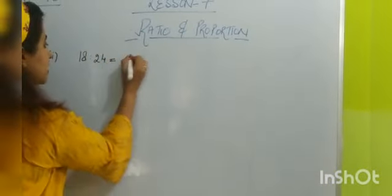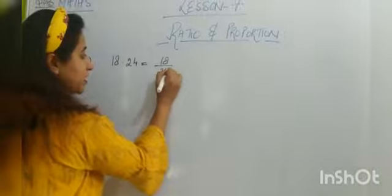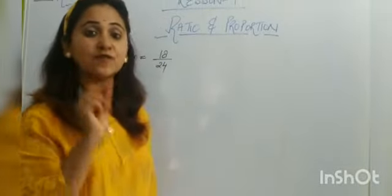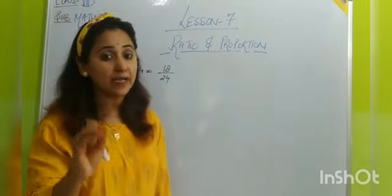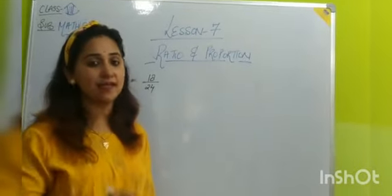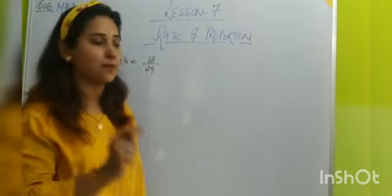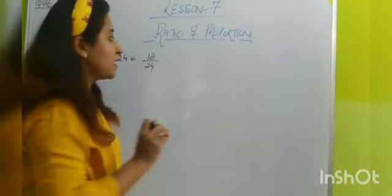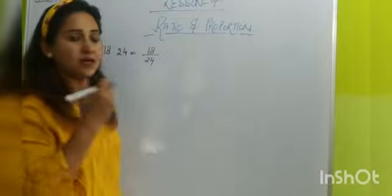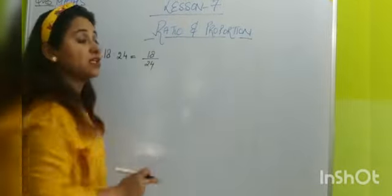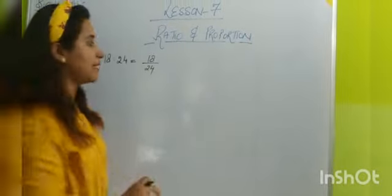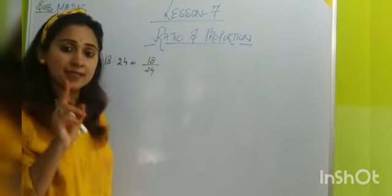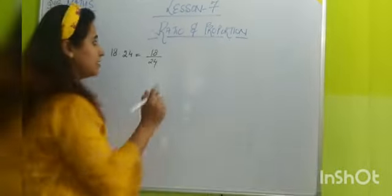So 18 ratio 24. So 18 upon 24. Remember whenever you are cutting this number you have to cut the numerator and denominator by same number. If you cut this by 2 and this by 3, so this is wrong. Keep it in mind when you are cutting the numbers, you have to cut it by same number.